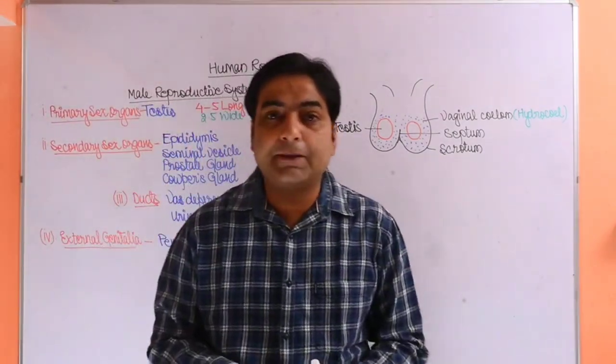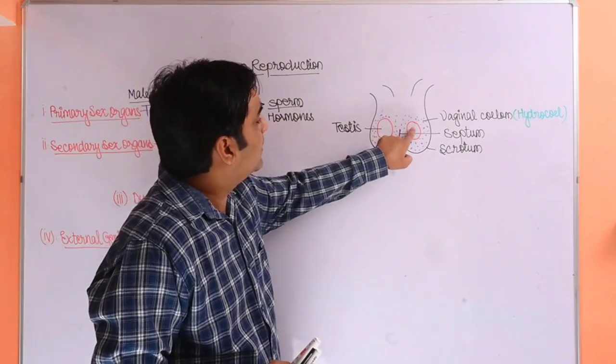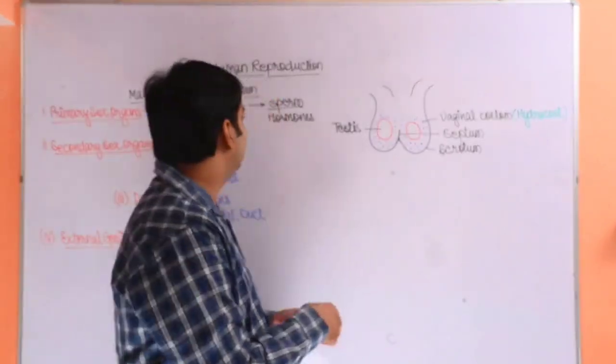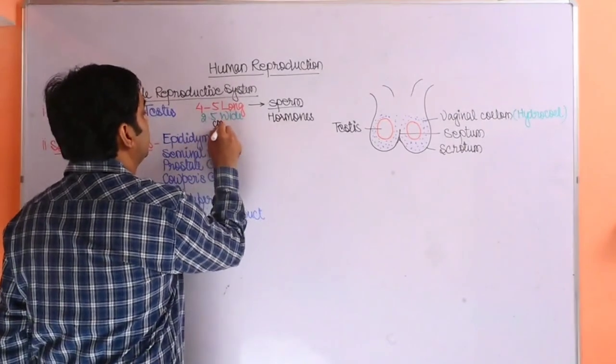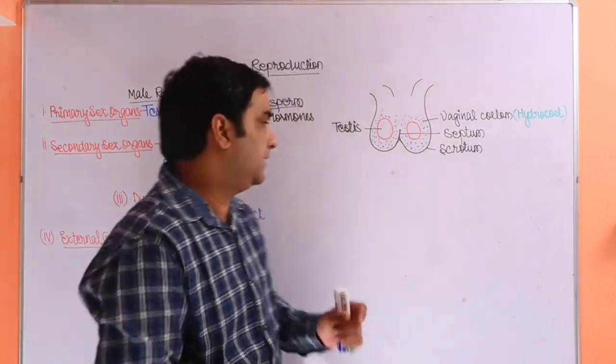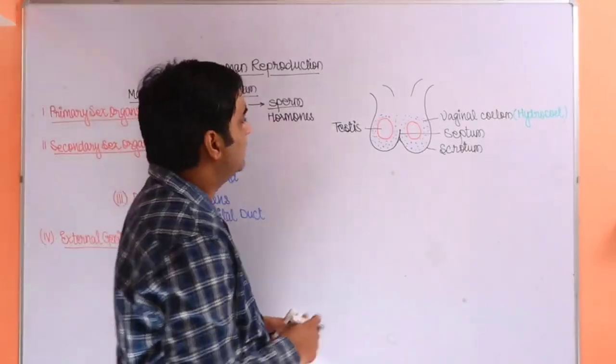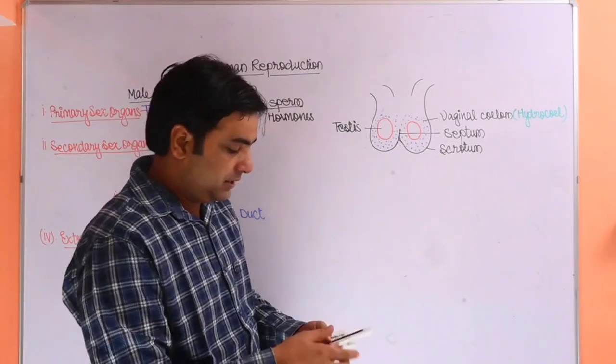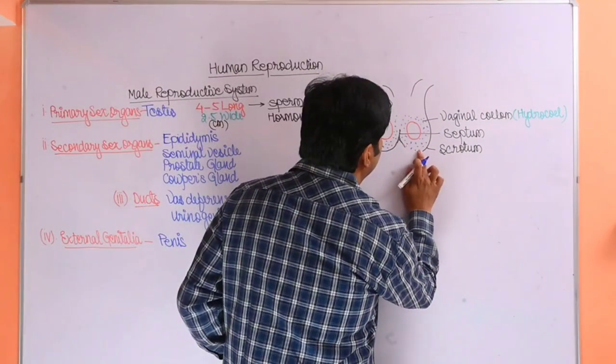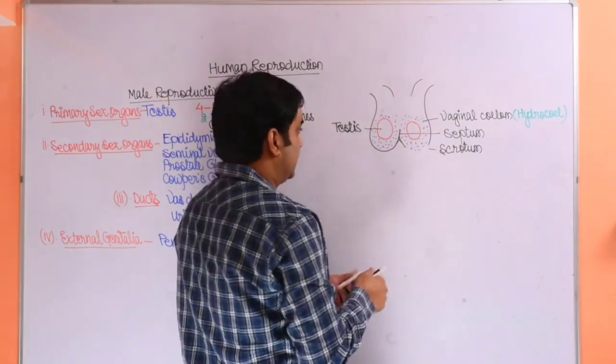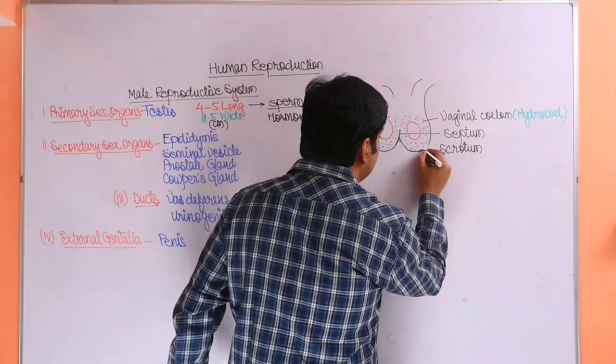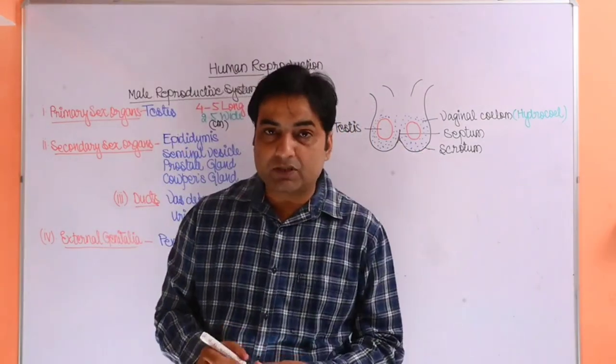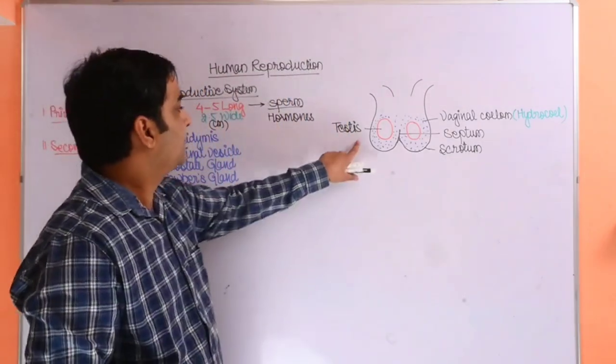Now what is testes? Testes are two ball-like structures which have a length of 4-5 cm long and 2.5 cm in width. This is the size, and they are equal in size almost. One of them would be a bit upper side.